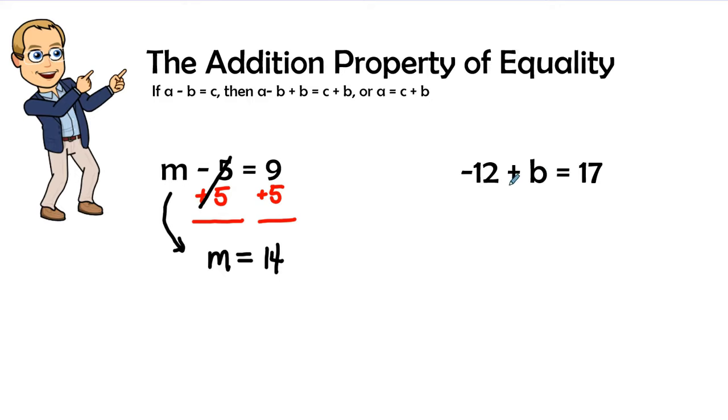The second problem we notice that the variable and the constant are in reverse order. That's not going to be a problem if we will treat it just exactly the same. So we ask ourselves what is attached to the negative twelve, or attached to b, and that is the negative twelve. So what is the opposite or the inverse of a negative twelve? It's a positive twelve.